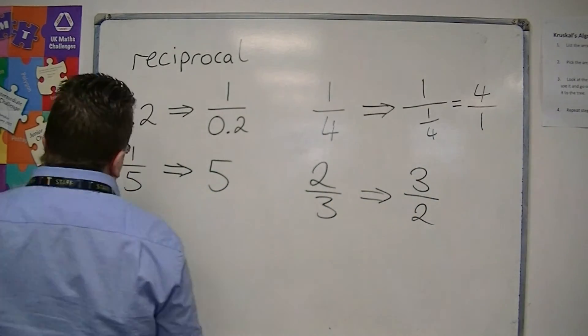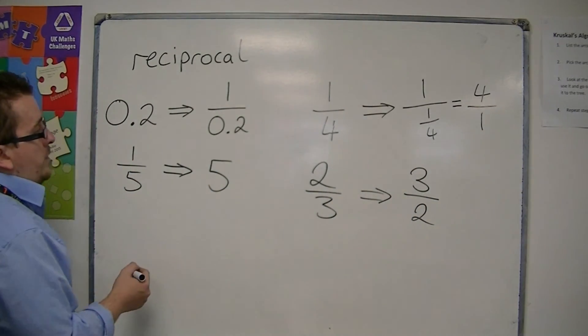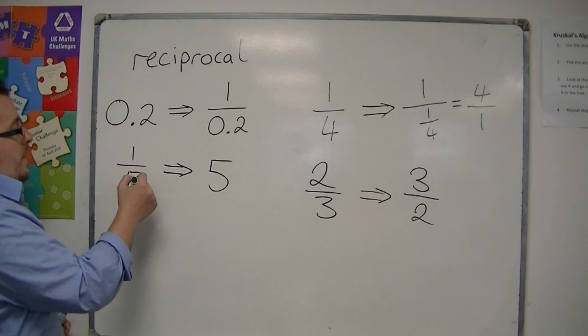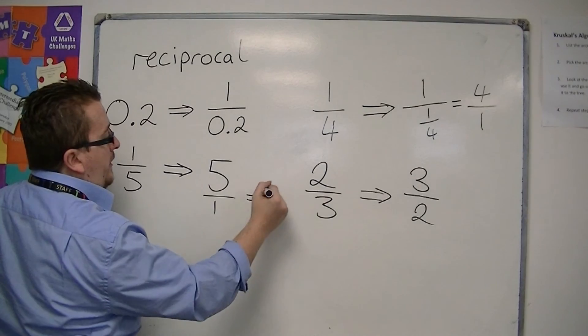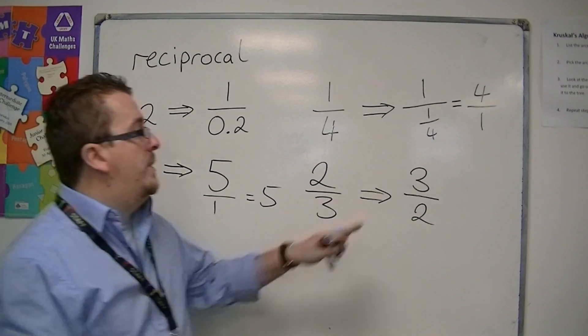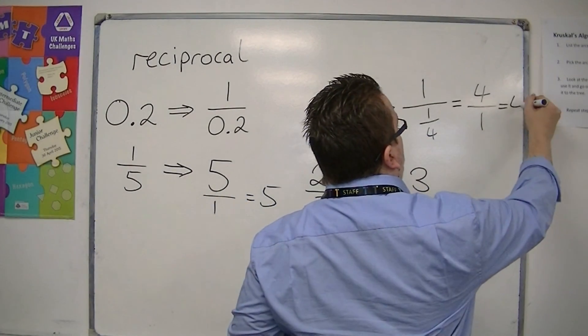Okay, so whenever you have a fraction like this, it flips upside down. You can write it as 5 over 1 if you like, but that's exactly the same as 5. So this one over here is exactly the same as 4.